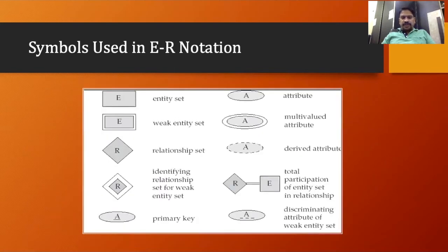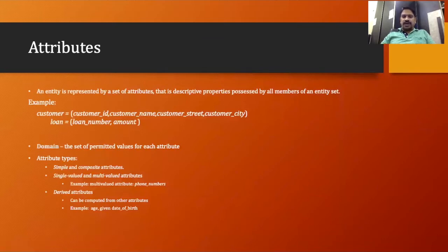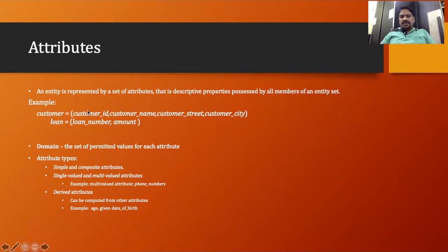The first thing we'll talk about in this diagram is the entity and its representation — this is how we can represent one entity. Now let's talk about attribute. Attributes are nothing but the properties of an entity. For example, a customer entity has attributes like customer ID, customer name, customer street, and customer city. Loan is another entity and has loan number and amount as its attributes.